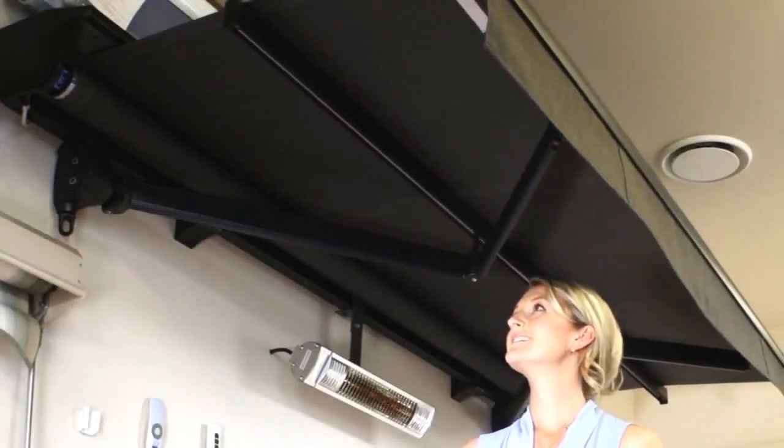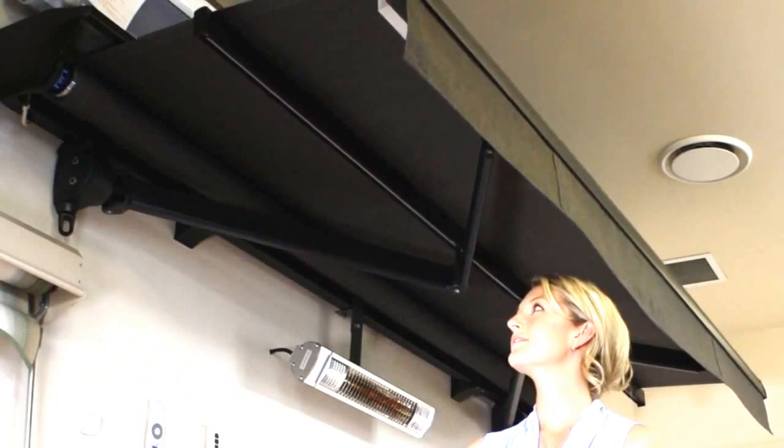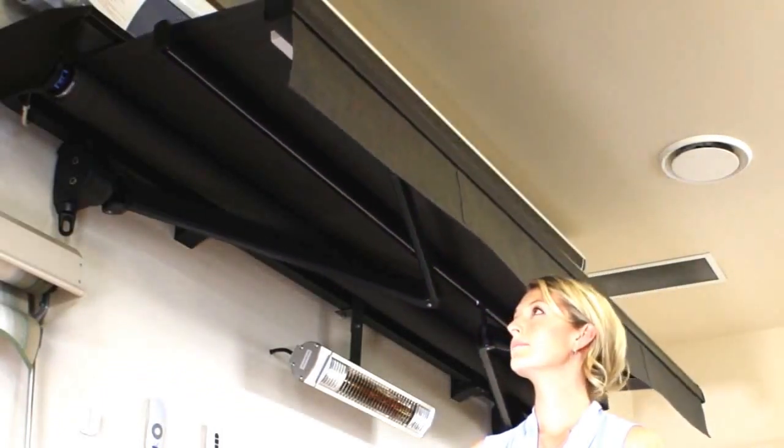The best fabric option for folding arm awnings is acrylic canvas, but there are some mesh options also available.